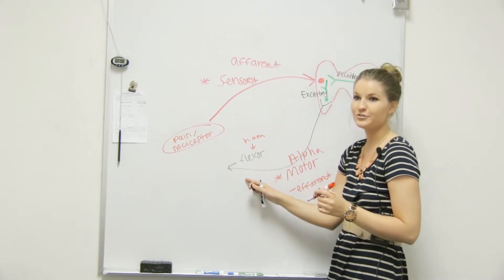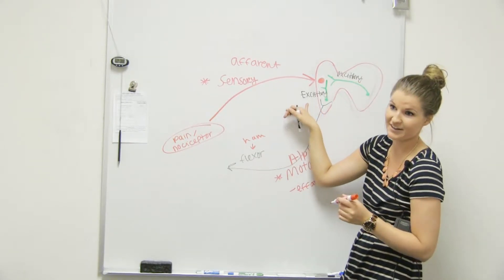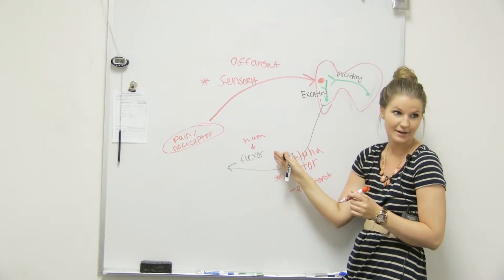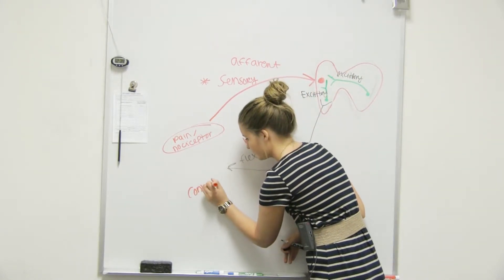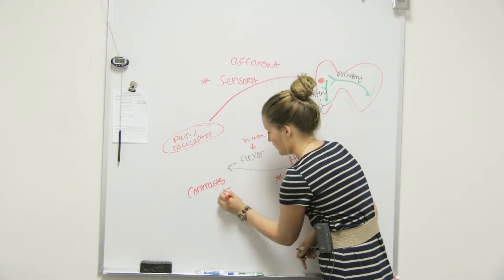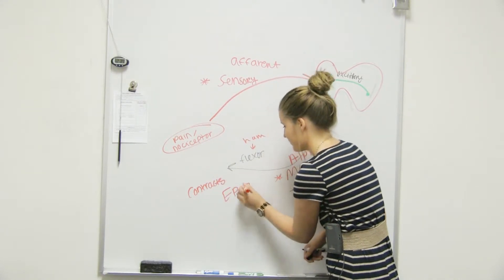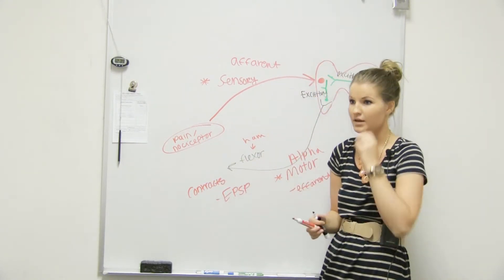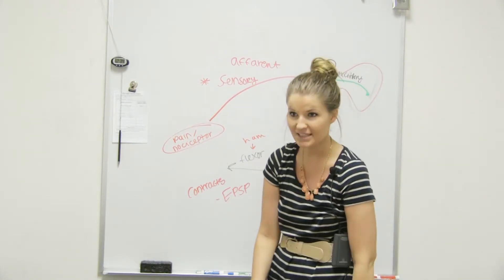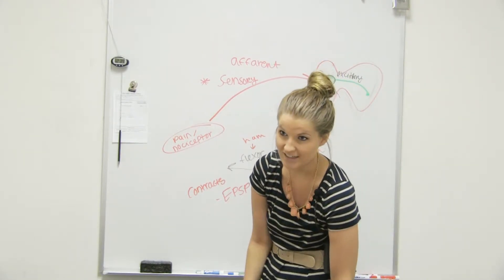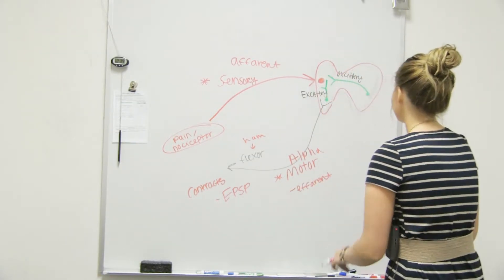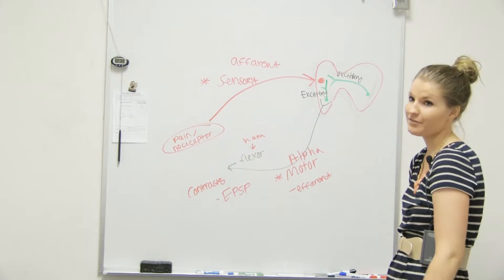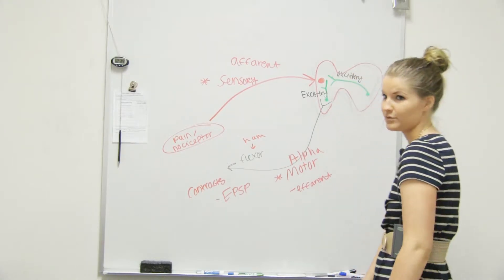Am I going to - well, this was an excitatory interneuron, right? So I'm going to be exciting my hamstring. So that contracts - EPSP, right? So we know what happens there. When that contracts, that's enabling us to come off of the pain. So now if we just come off, we're going to fall down, right?